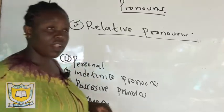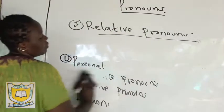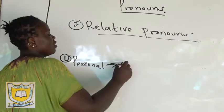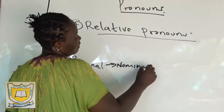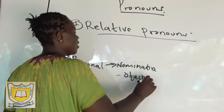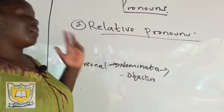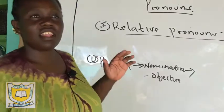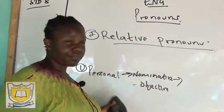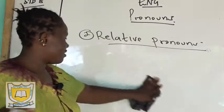Personal pronouns show the doer or the receiver of an action in a sentence. Personal pronouns are divided into two: nominative and objective. Nominative pronouns show the doer of the action, whereas objective pronouns show the receiver of the action.